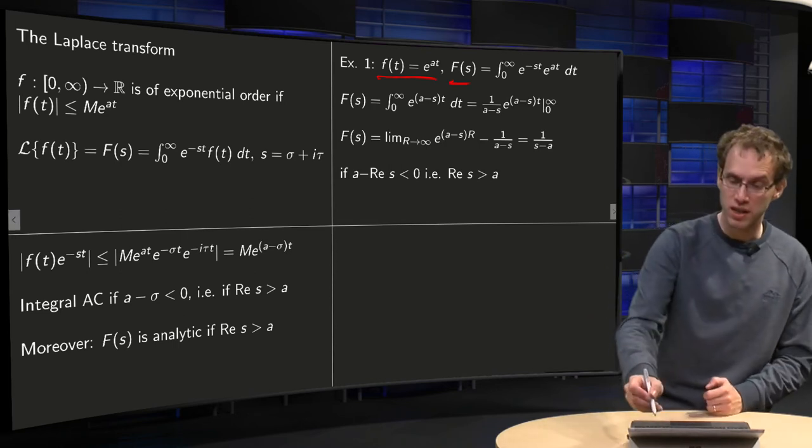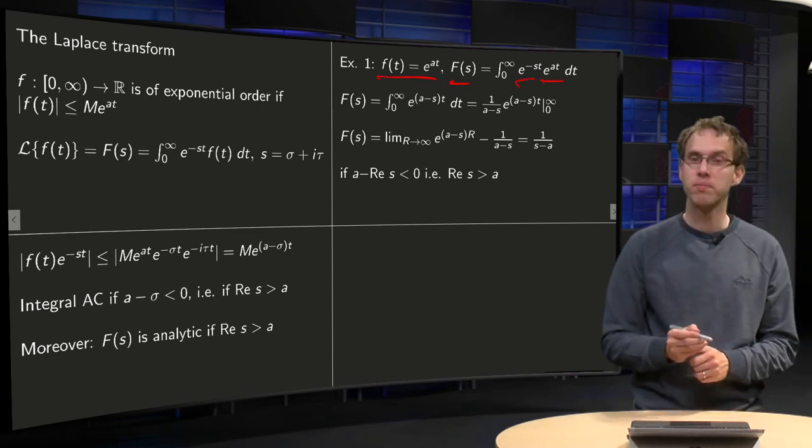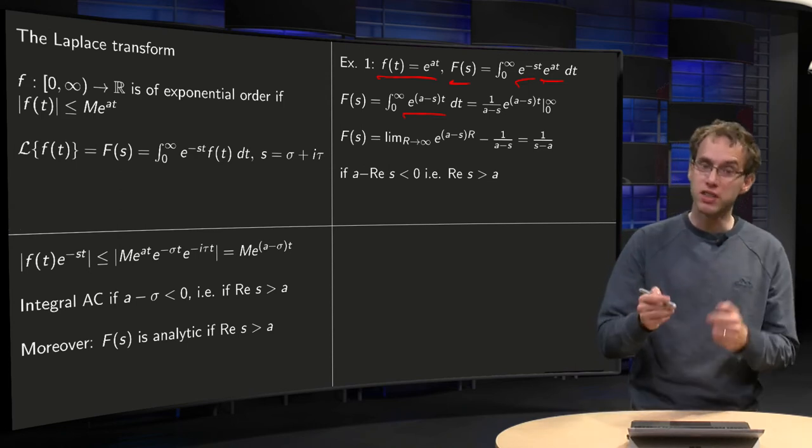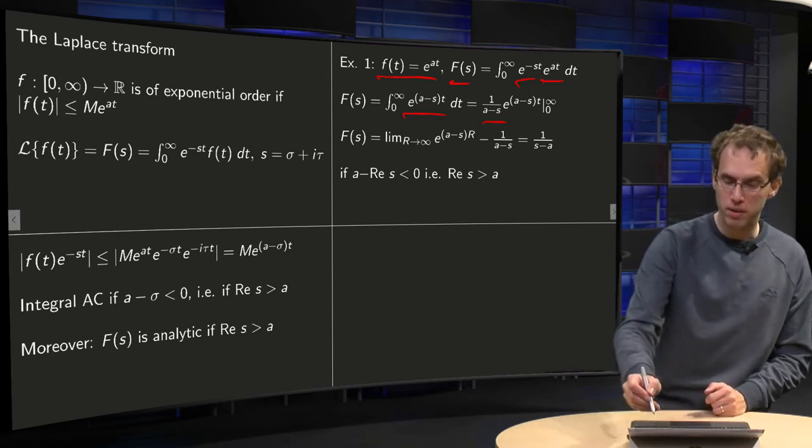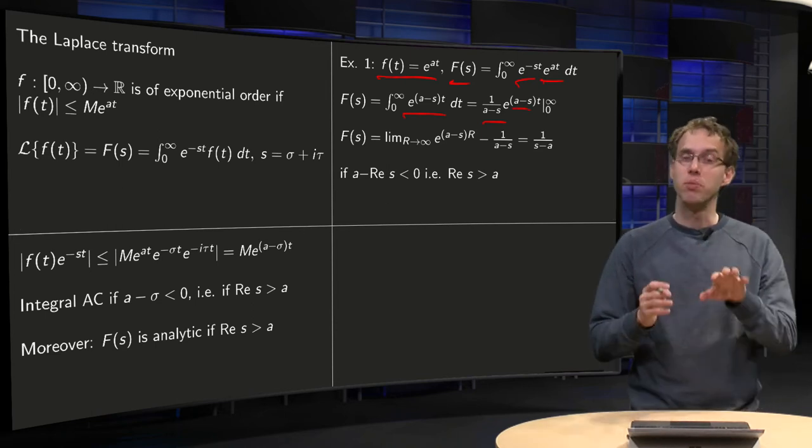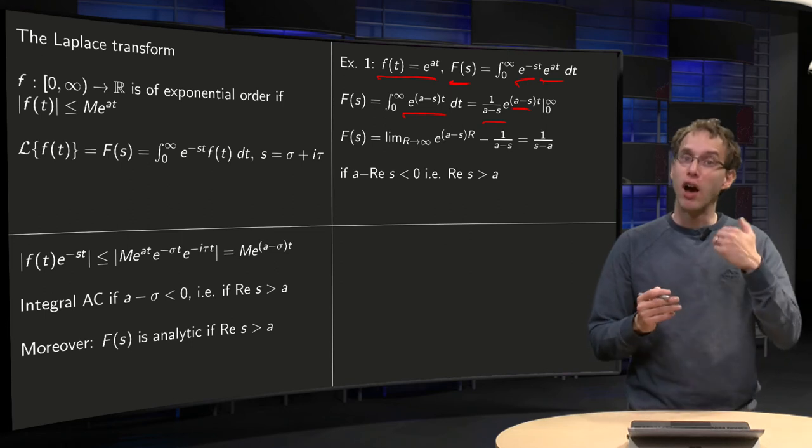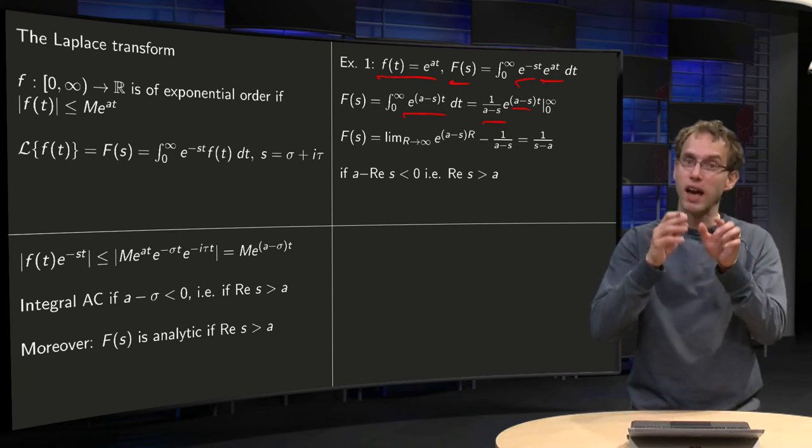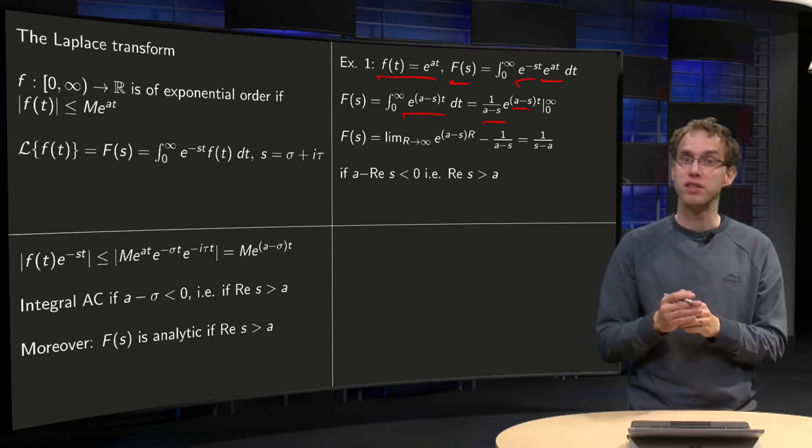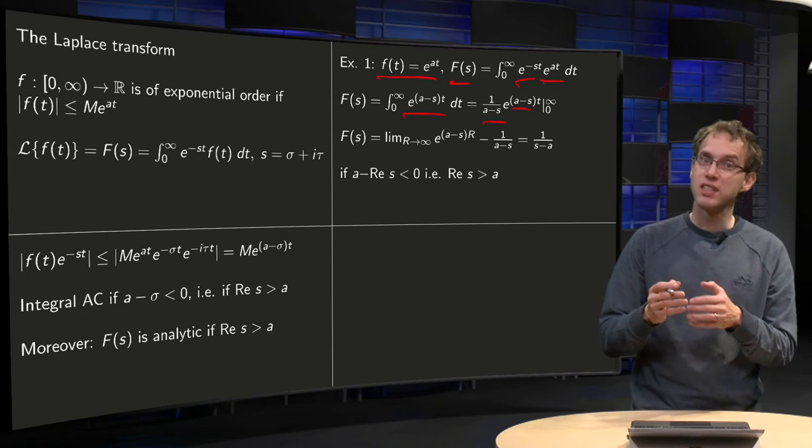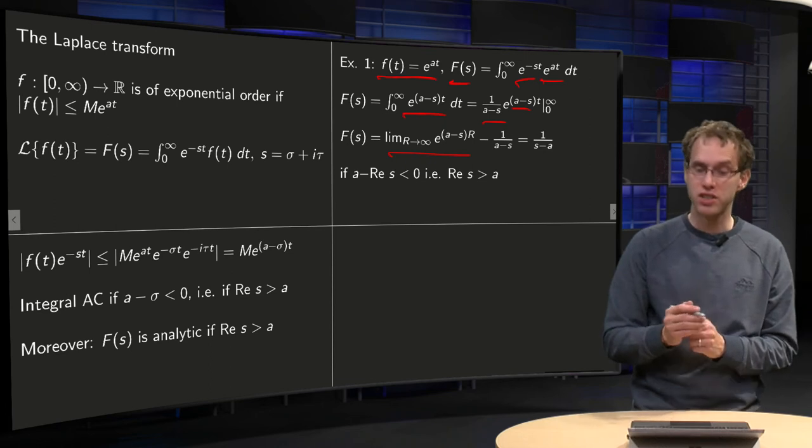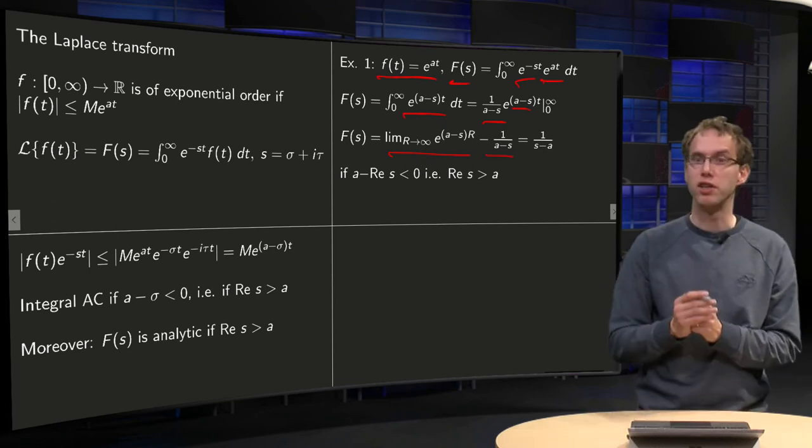So we integrate your function times e^(-st), so it yields e^((a-s)t). Integrate, so you get 1/(a-s) times e^((a-s)t), from 0 to infinity. The lower boundary is no problem. Upper boundary, we have e^((a-s)t), where t goes to infinity. Only converges if a minus s, if this limit here exists, minus lower boundary, which is no problem of course.